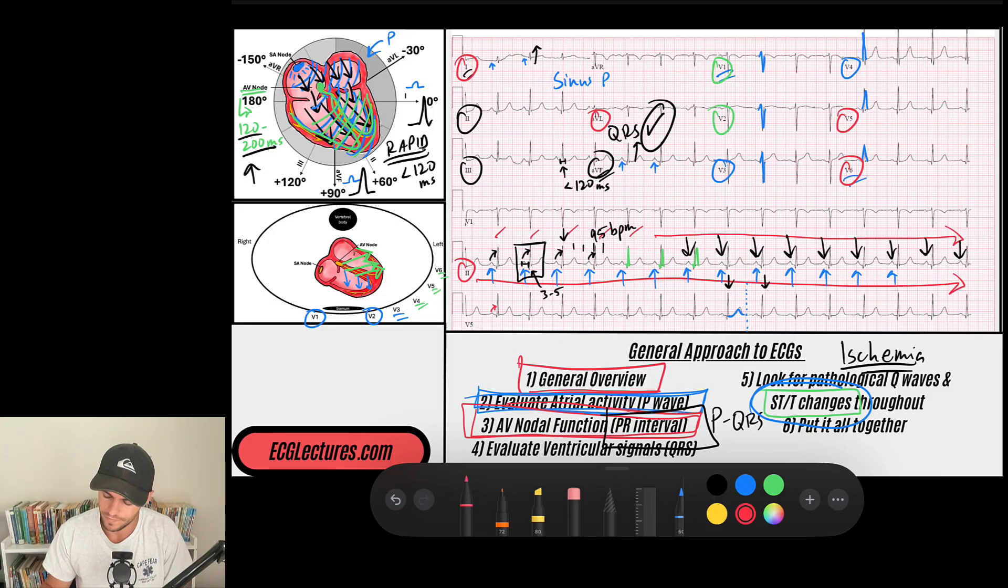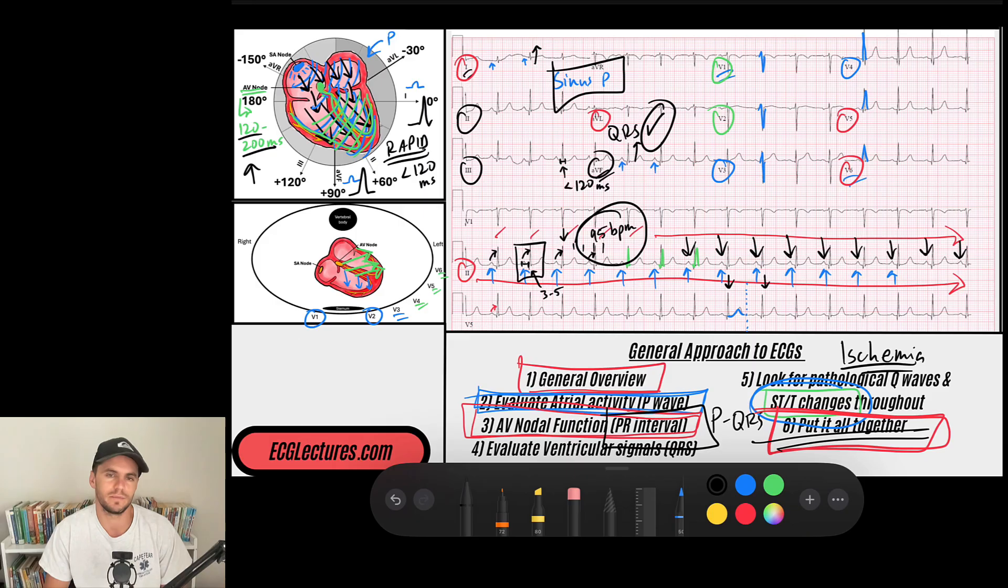And then the last thing we're going to do is put it all together. So steps one through five, they all need to come together and explain the rhythm, meaning does this work physiologically? So in this case, we said we have atrial P waves that are driving the rhythm with normal P and QRS relationships, meaning a normal PR interval. The atria is driving, the ventricle is doing so adequately. We look at ventricular depolarization. Does that make sense? Why is it narrow? How is the axis? Does that explain a supraventricular rhythm in this case? And it does. So ultimately, when we put it all together, we're going to put these findings together and we're going to say we have a sinus rhythm at a rate of 95 beats per minute. And that's that.